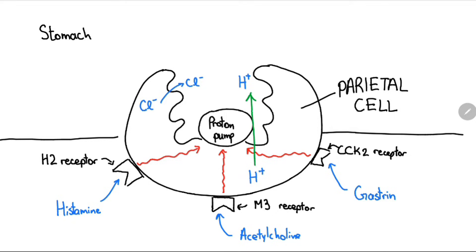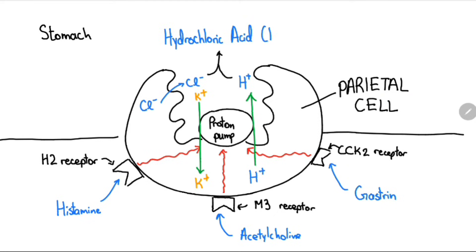The proton pump moves protons into the stomach and potassium back into the parietal cell. These protons bind to chloride ions to form hydrochloric acid, increasing stomach acidity.